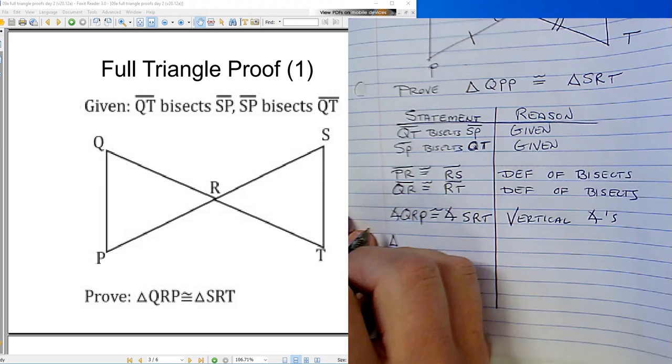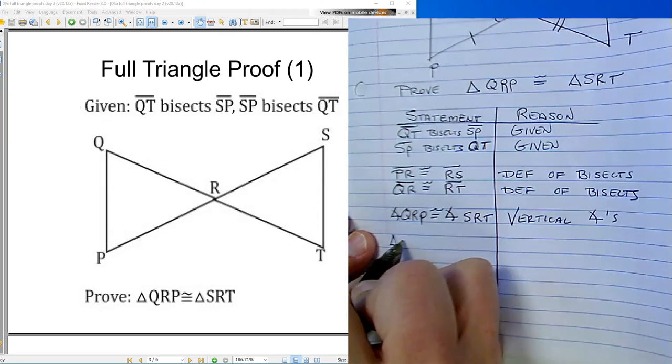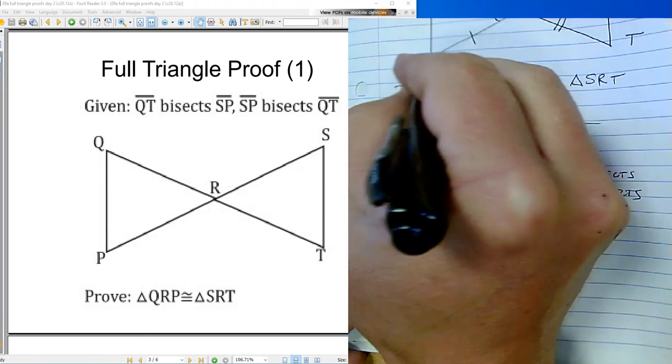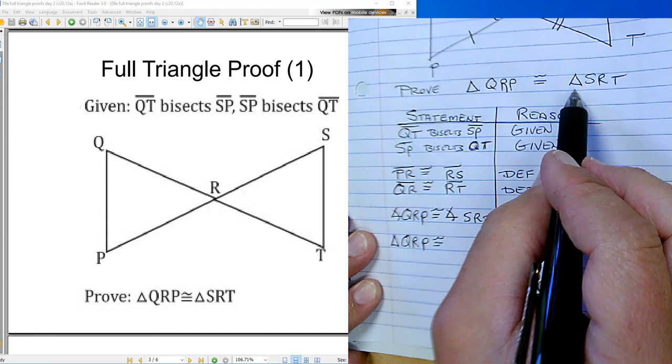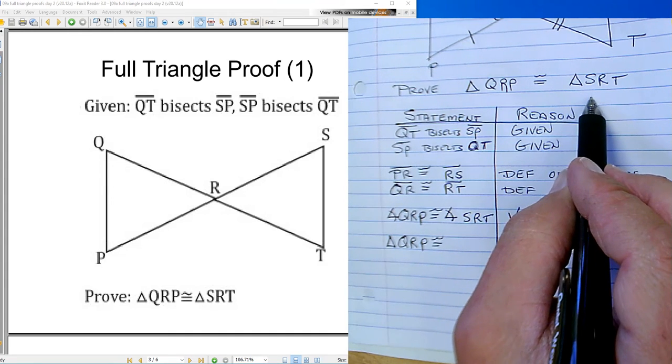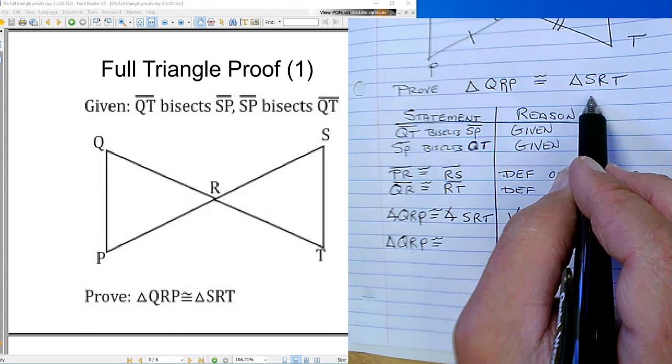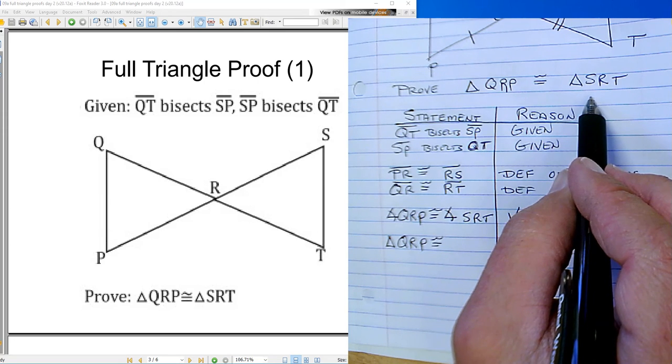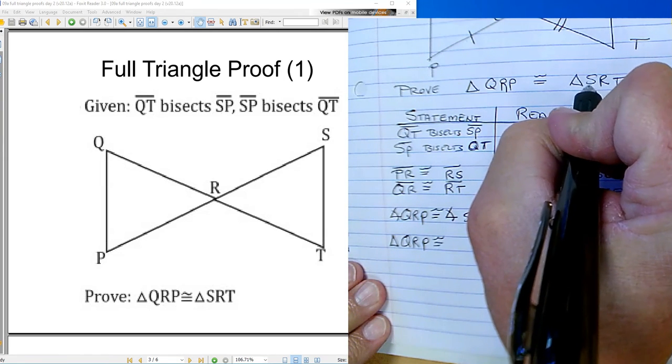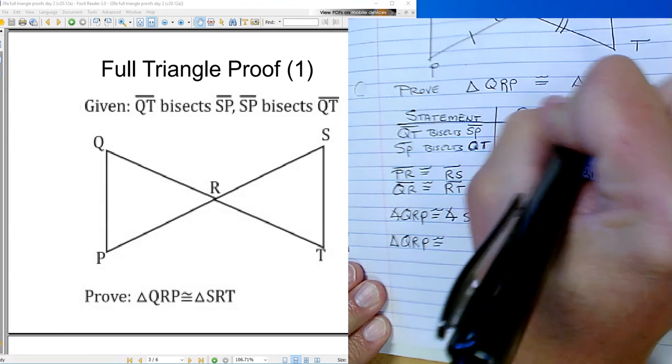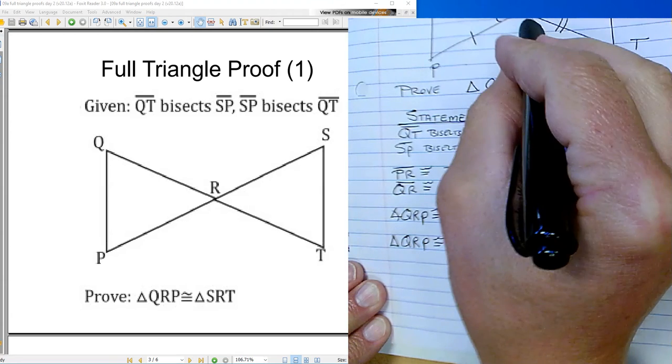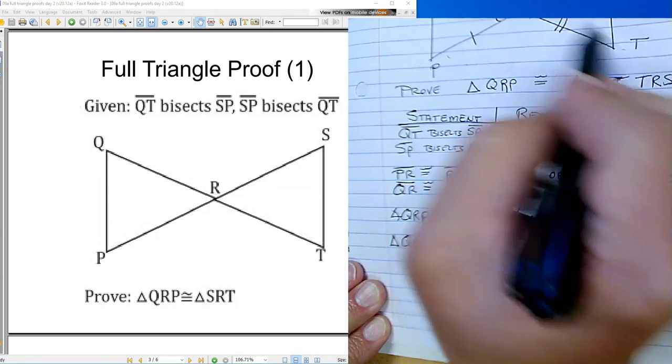Q... There should be an R on that. QRP. Q... R...P... T...R...S. Is congruent to... Q...R...P... I'm gonna have to fix this. It shouldn't be SRT, it should be TRS right? It goes over the 2 to the center QRP TRS okay